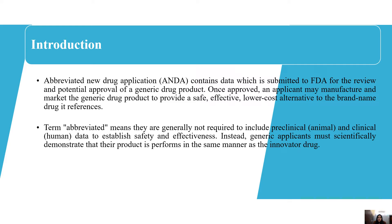What is a generic drug? A generic drug product is one that is comparable to an innovator drug product in dosage form, strength, route of administration, quality, performance, characteristics, and intended use. The term 'abbreviated' means they are generally not required to include pre-clinical and clinical data to establish safety and effectiveness. Instead, generic applicants may scientifically demonstrate that their product performs in the same manner as the innovator drug.